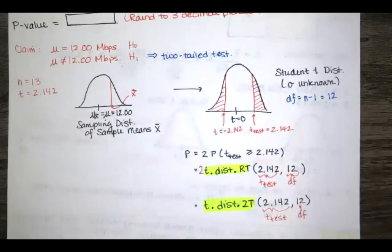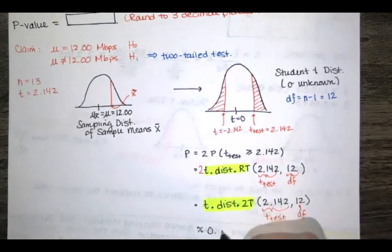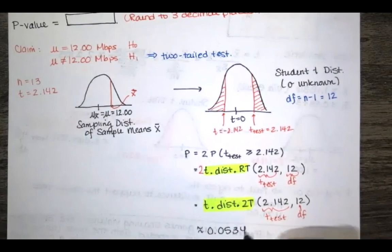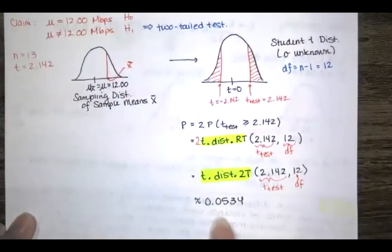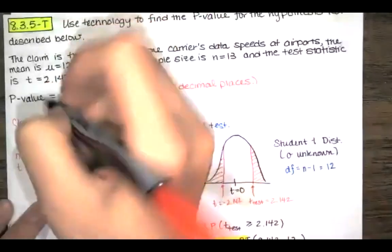So I just wanted you to see that you get the same answer either way and in our case that p value was approximately equal to 0.0534 and they asked us to round to three decimal places so we'll round to 0.053